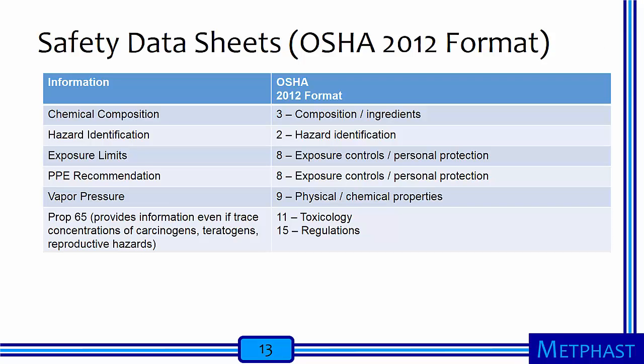Safety data sheets should also be consulted, as they provide important information on each of the raw materials used in the process. Critical information to take from safety data sheets includes chemical composition found in section 3, hazard identification found in section 2, exposure limits and personal protective equipment recommendations both found in section 8, vapor pressure found in section 9, and adverse health information found in section 11 on toxicology and section 15 on regulations.